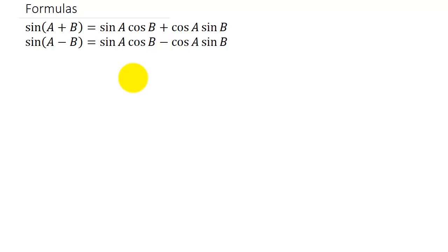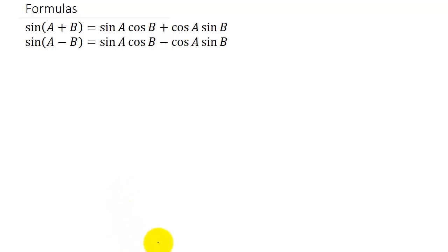In this video let's talk about the sum and difference identities for sine. We're going to use the sum and difference formulas to evaluate or find the exact value of trig functions like sine of 75 degrees. The sine of A plus B is equal to sine A cosine B plus cosine A sine B, and the sine of A minus B is sine A cosine B minus cosine A sine B.